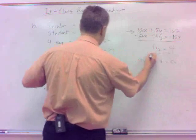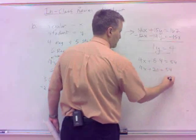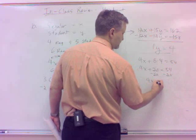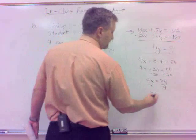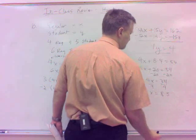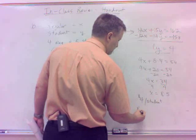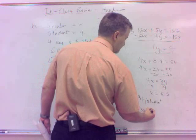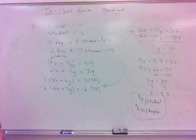Still need the regular price, so just do a little substituting, right? Y is four, so this would be 4x plus five times four equals 54. Just substitute that y in. So, it's 4x plus 20 equals 54. Subtract 20, so 4x equals 34. Divide by four. And so, x is, it's going to be 8 point something, 8.5. So, we've got a $4 student price and an $8.50 regular price. Alright.